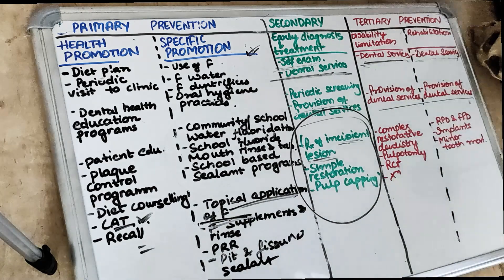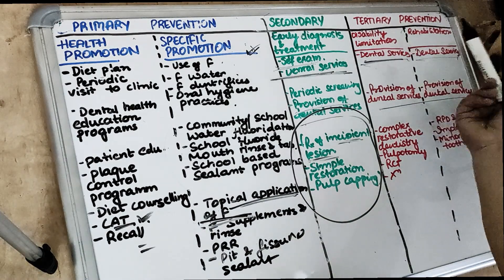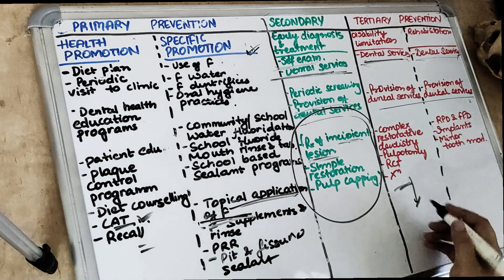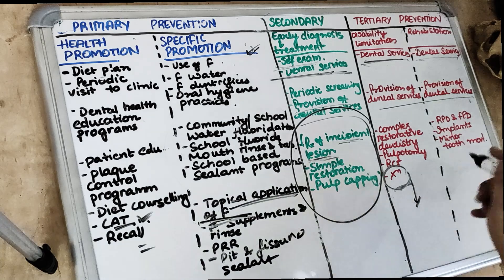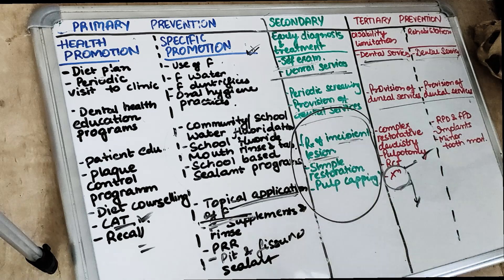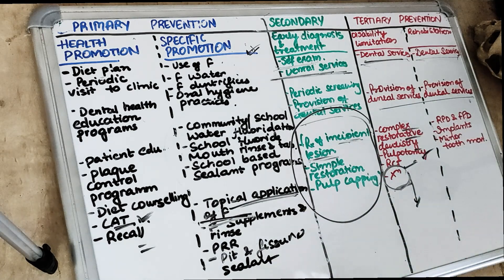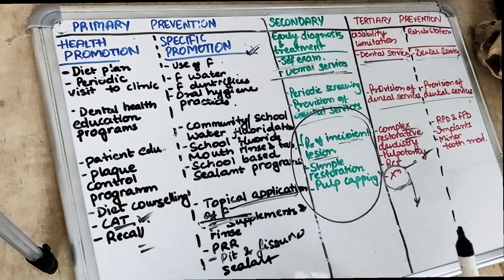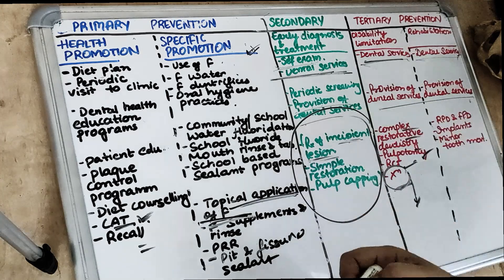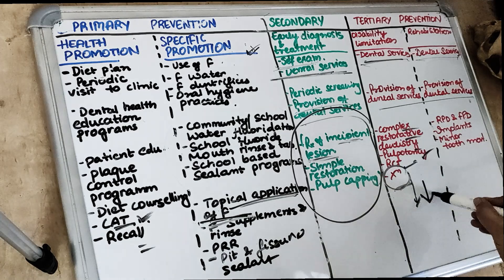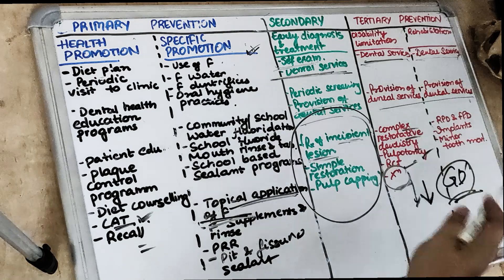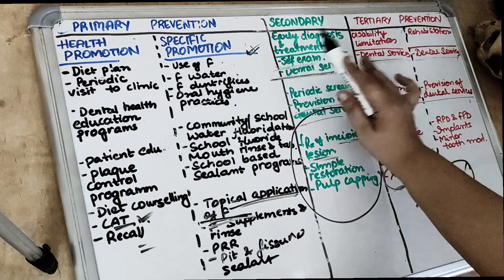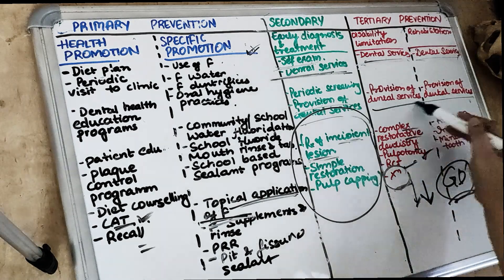Next comes tertiary prevention. Tertiary prevention involves disability limitation and rehabilitation. Disability limitation means we remove the tooth which cannot be restored or corrected — that is extraction — at the dental professional level. Or we use root canal treatment. If it is a pediatric patient, then pulpotomy. Or complex restorative dentistry. At the community level, it is the provision of dental services and periodic screening. At the individual level, it is the use of dental services, because when caries has progressed and the tooth is grossly decayed, the individual cannot manage it alone.